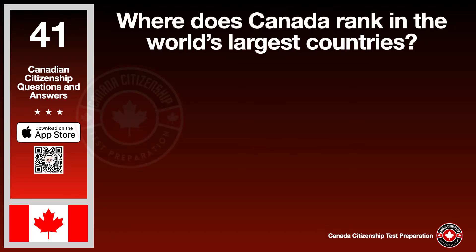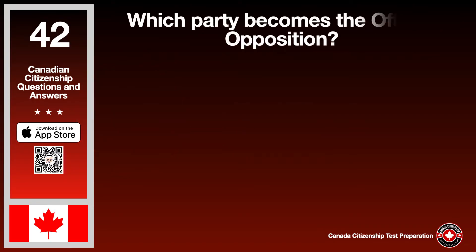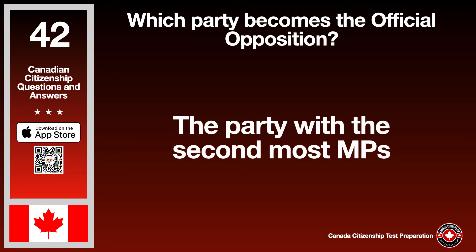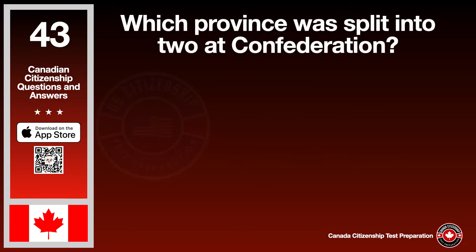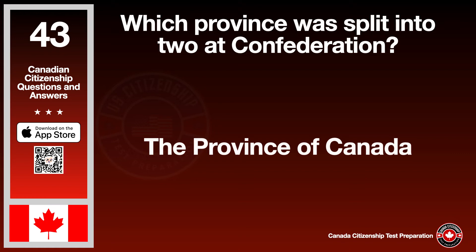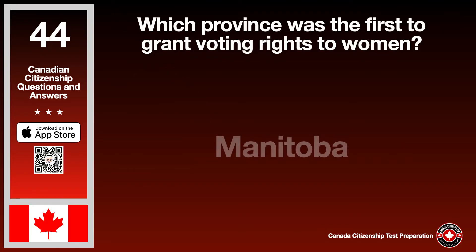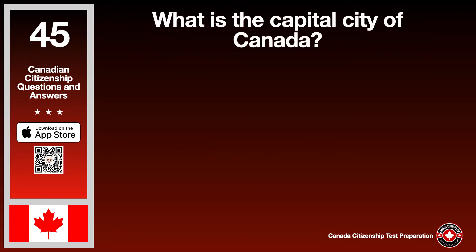When did the Canadian Charter of Rights and Freedoms become part of the Canadian Constitution? The answer is 1982. Where does Canada rank among the world's largest countries? The answer is second. Which party becomes the official opposition? The answer is the party with the second most MPs. Which province was split into two at Confederation? The answer is the province of Canada. Which province was the first to grant voting rights to women? The answer is Manitoba.